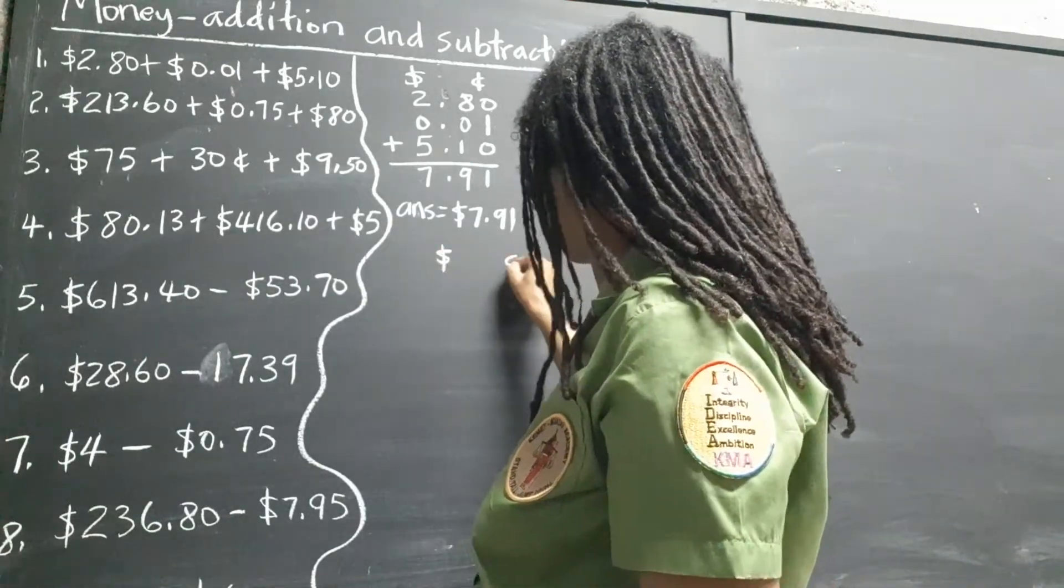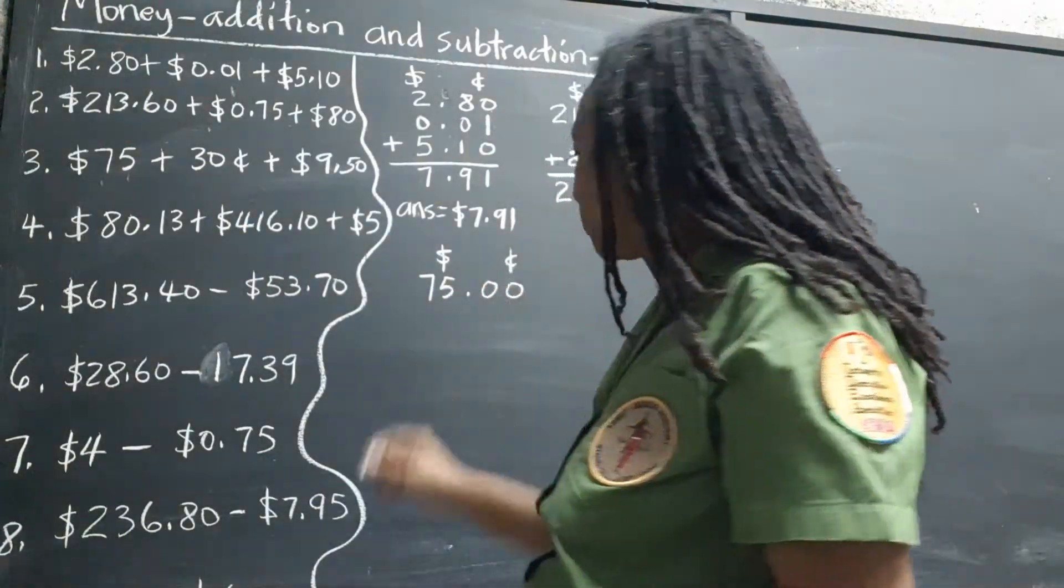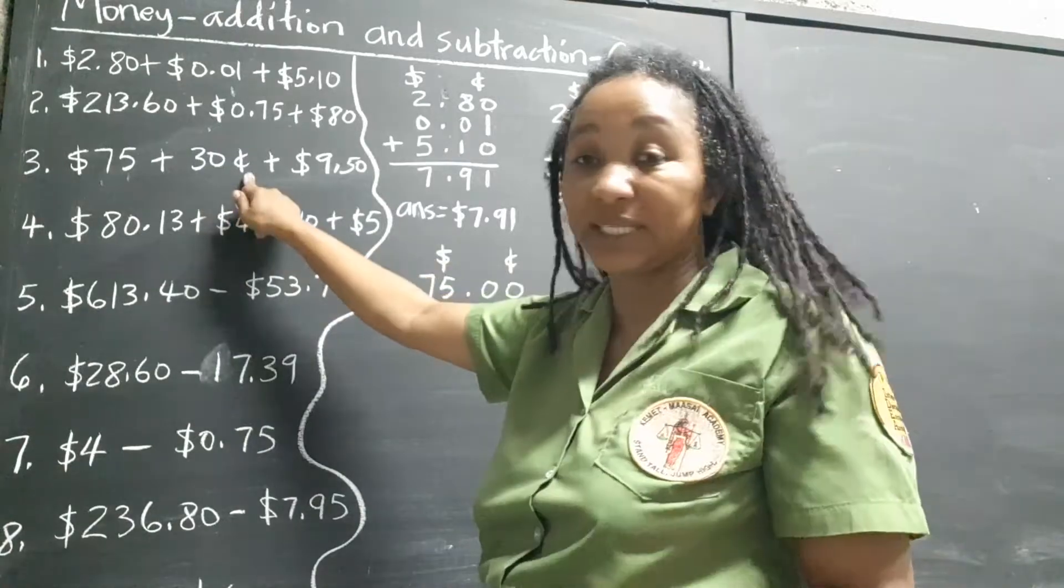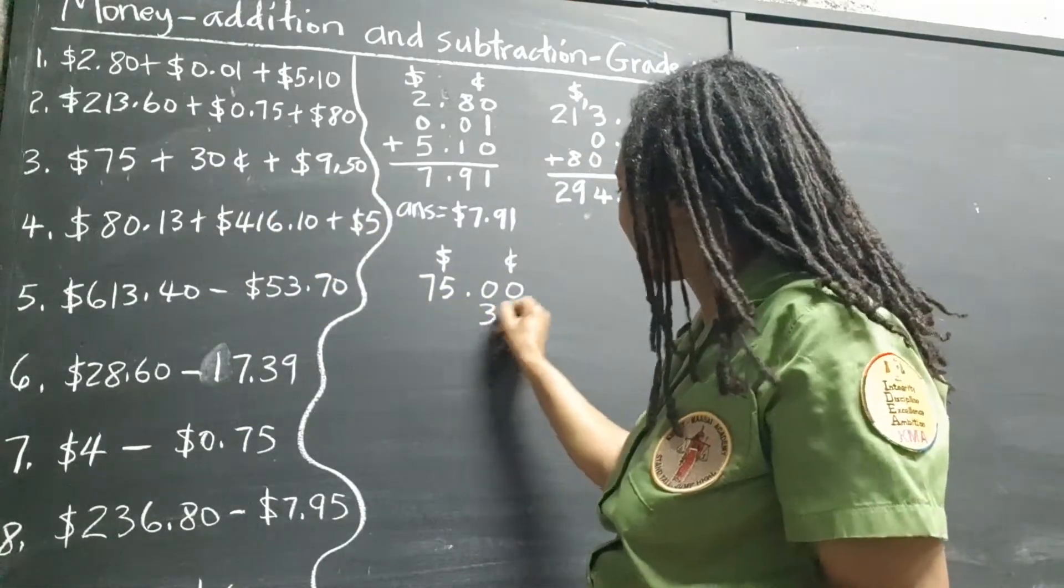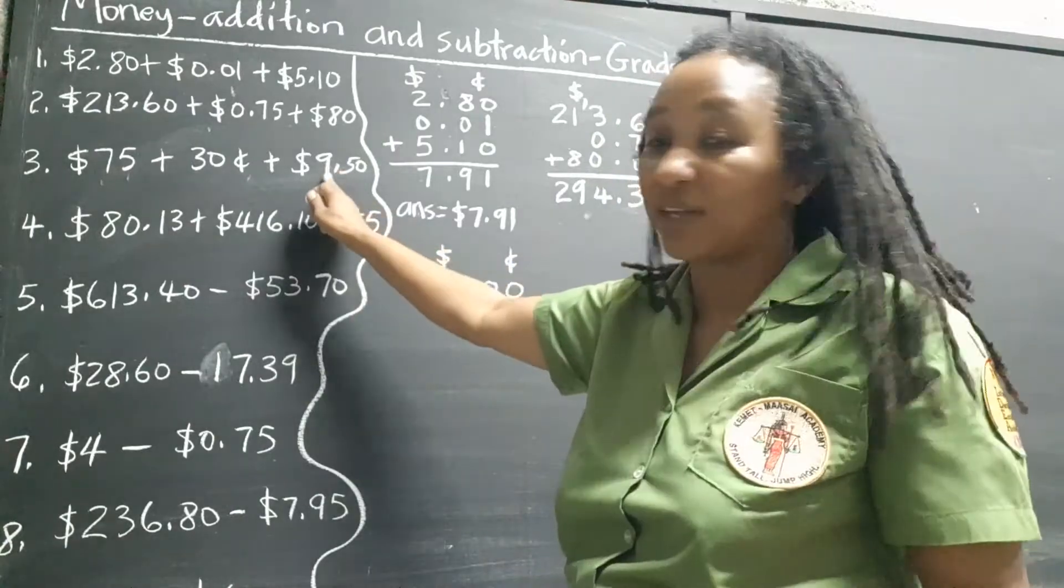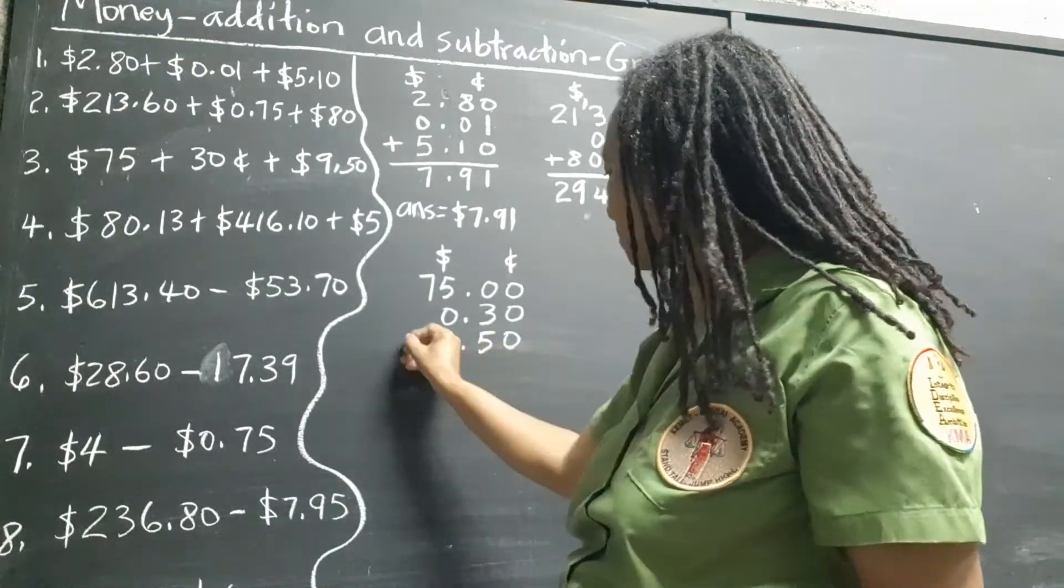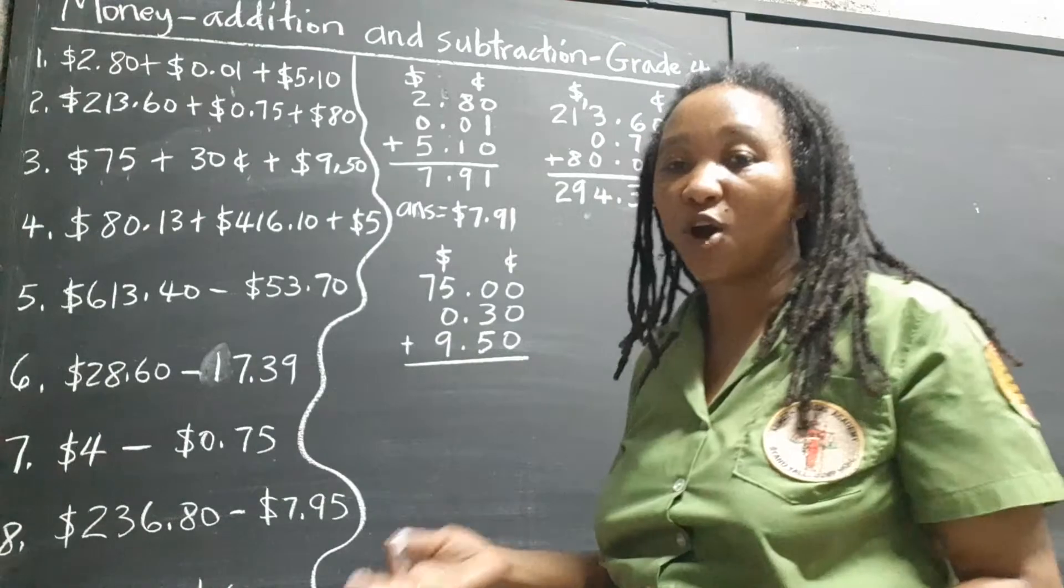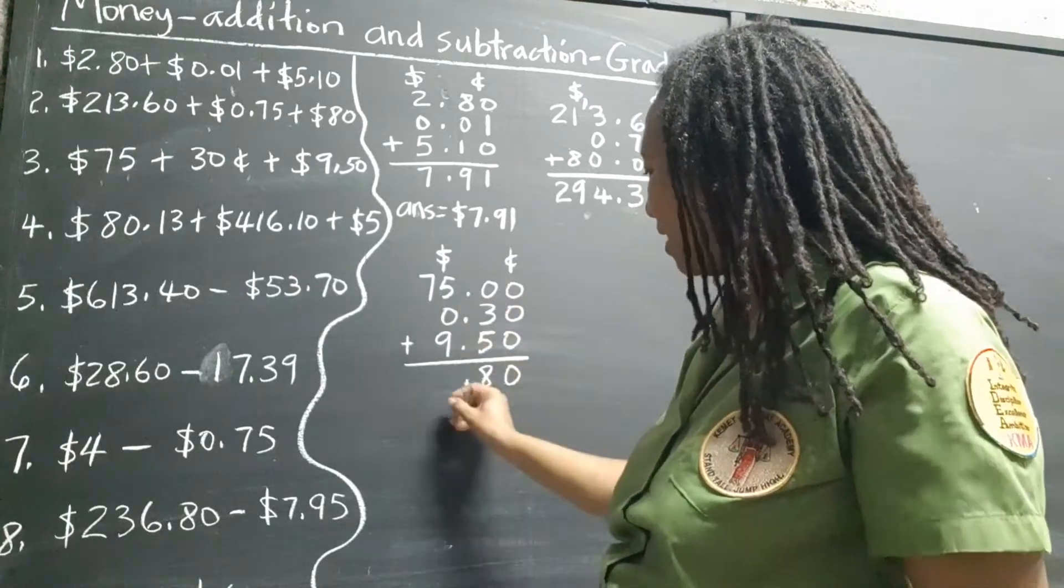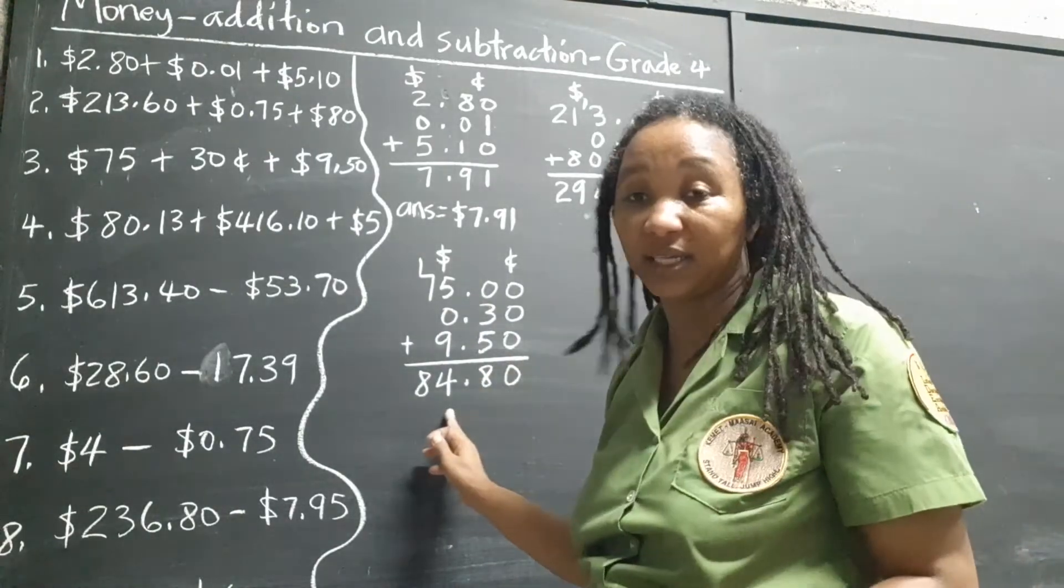Let's go again. So we have $75. It's no cents. But we just want everything to look uniform. So we put in our 0.00. 30 cents. It belongs over this side. It's cents. 30 cents. So we can fill in a 0 to show that there are no dollars. $9.50. So that's $9.50. Now we go ahead and add. 3 and 5, 8. 5 and 9, 14. 7 and 1, 8. So our answer is $84.80.